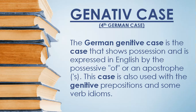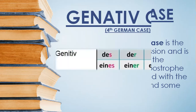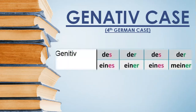Let's learn the Genitive table. For Genitive: masculine uses 'des' (with -s added to the noun), feminine uses 'der', neutral uses 'des' (with -s added), and plural uses 'der'. So the changes occur in the masculine and neutral forms.